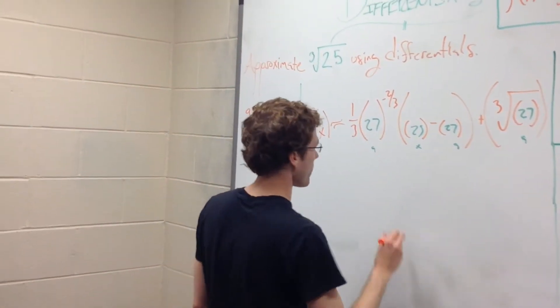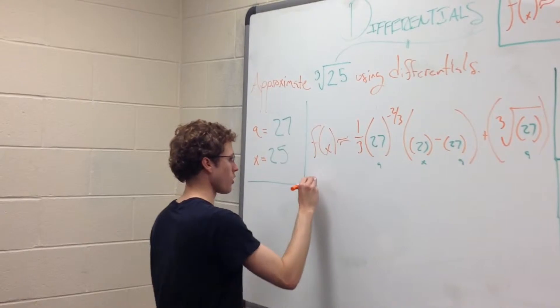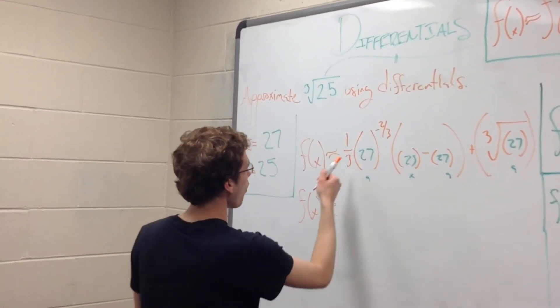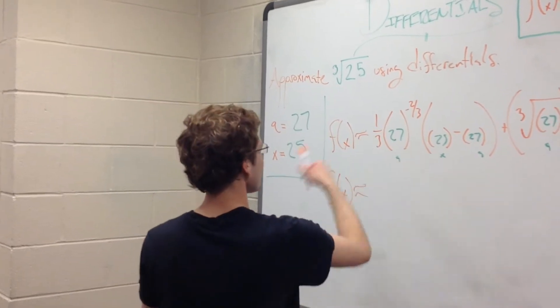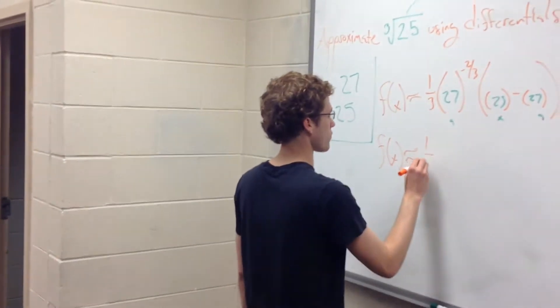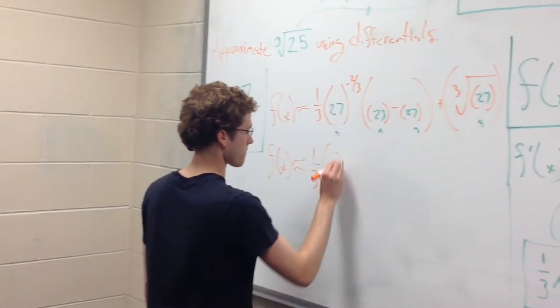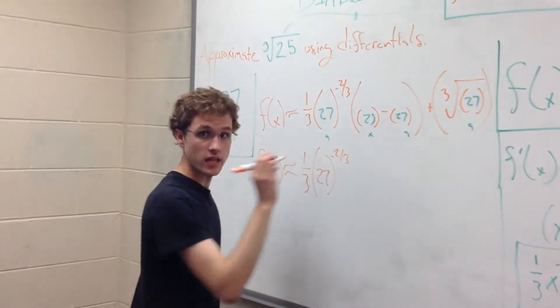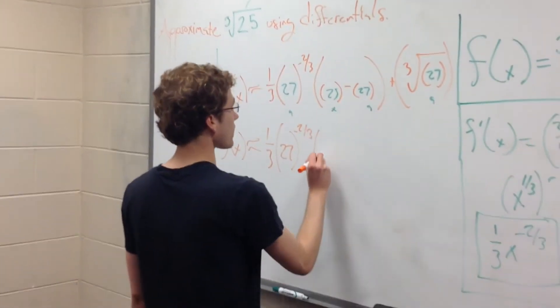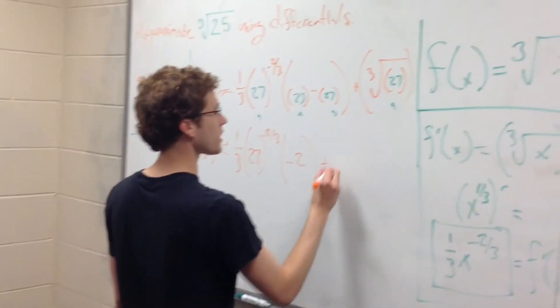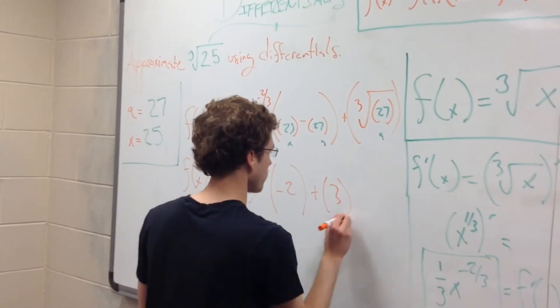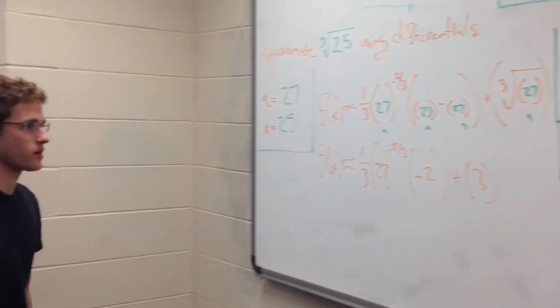Now we're just doing simple math. Let's break this down some more. f of x is roughly equal to one-third of 27 raised to the negative two-thirds. Let's just leave that where it is for the time being. 25 minus 27, negative two, plus the cube root of 27. We just said that was three, right? So not a big deal. Our next step.